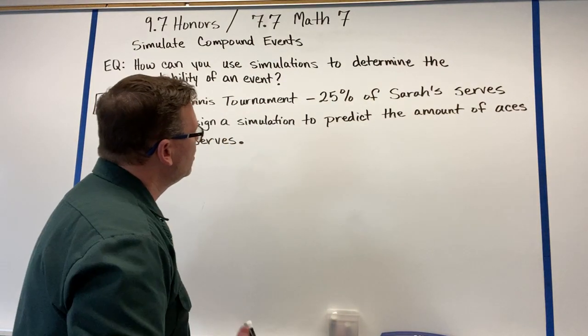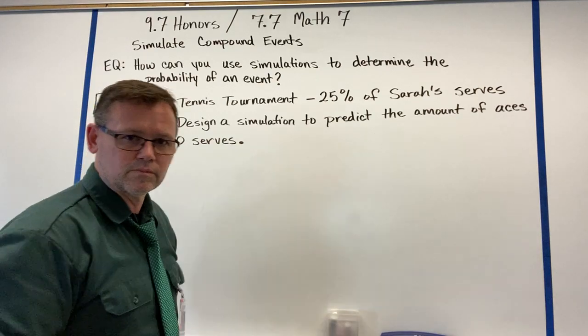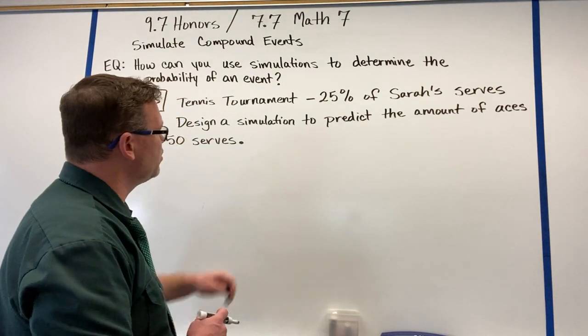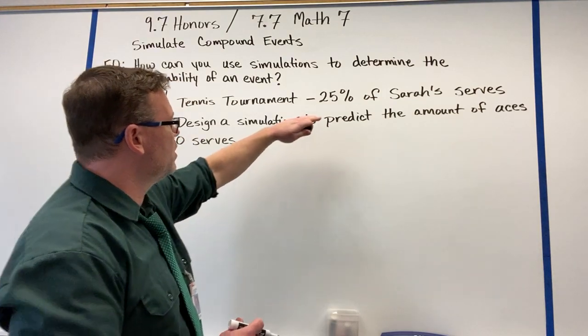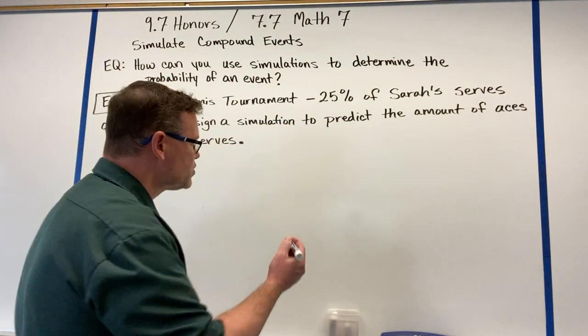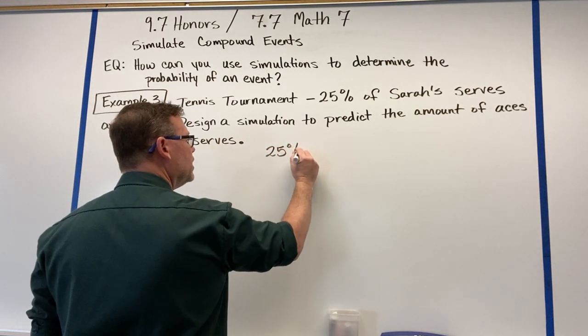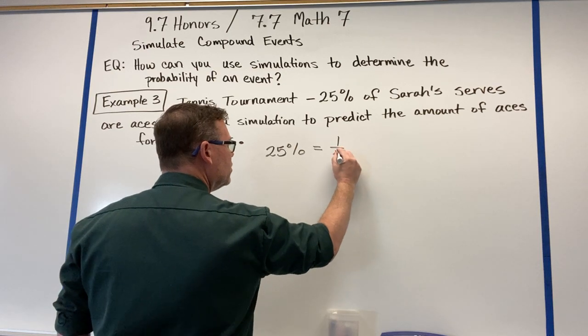Sometimes we're going through and we're doing this based off of theoretical probability or we're dealing with facts. In other words, right now she's at 25% of her serves. So we have to know that 25% equals one-fourth.